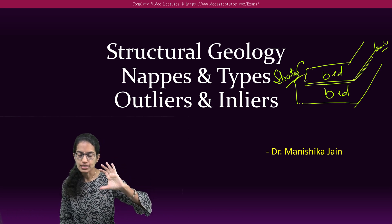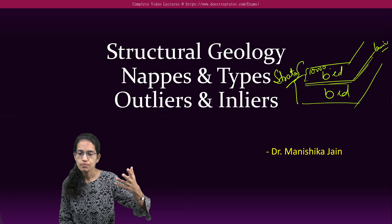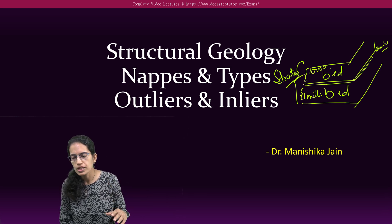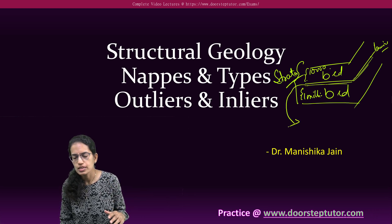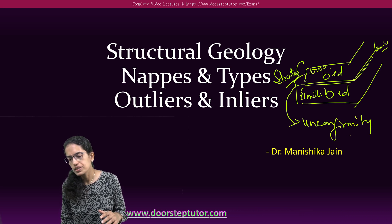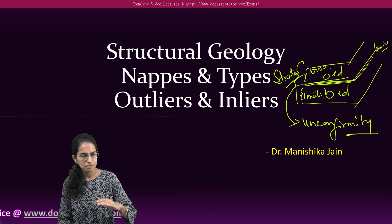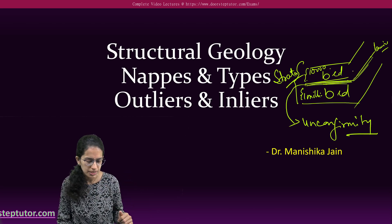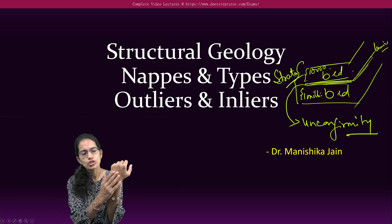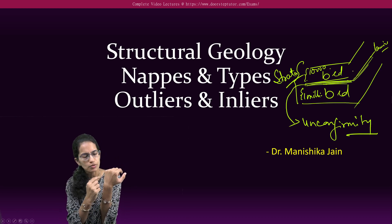Let's say this bed is 10,000 years old but this other bed was 1 million years old — so between the two there is an unconformity. Now if this unconformity is denoted by a parallel line it is called as paraconformity.